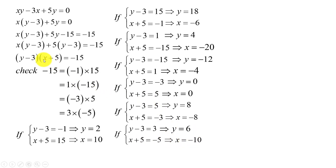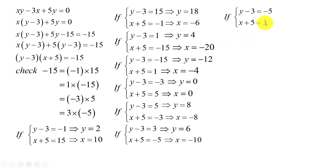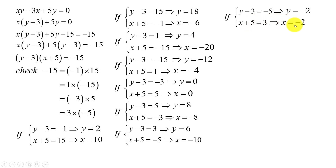And if y minus 3 equals negative 5 and h plus 5 equals 3, moving minus 3 to the right-hand side gives y equals negative 2, and moving 5 to the right-hand side gives h equals negative 2.